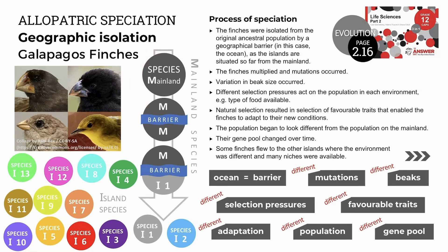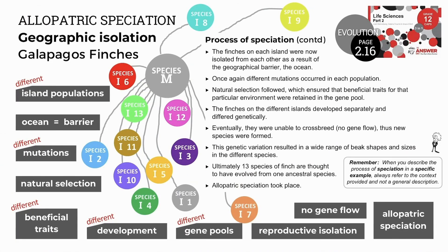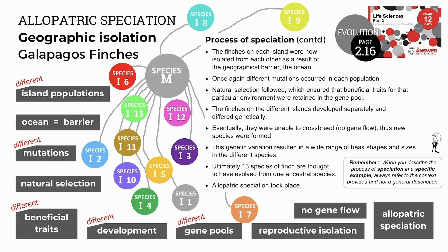They eventually formed different gene pools in these populations, different from the ancestral finch from the mainland. Finches then migrated to other islands with different environments, and the same process was repeated to produce more finch species. These island finches became isolated from each other in separate populations by the geographical barrier of the ocean. Again, random different mutations occurred in the populations on each island. Natural selection ensured that finches with different beneficial traits for each environment developed independently in their particular population, keeping the favorable genes, which caused changes in the gene pools and made them different.